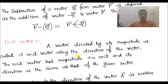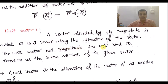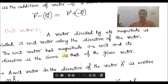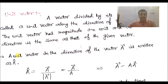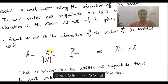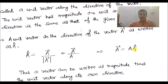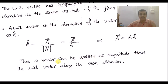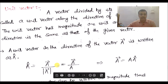Next is the unit vector. A vector divided by its magnitude is called a unit vector along the direction of that vector. It is a vector having magnitude 1, and its direction is the same as that of the given vector. If A-cap is a unit vector in the direction of vector A, then A-cap = vector A divided by its magnitude |A|. And thus vector A can be written as |A| times A-cap — that is, a vector equals its magnitude times the unit vector along its direction.